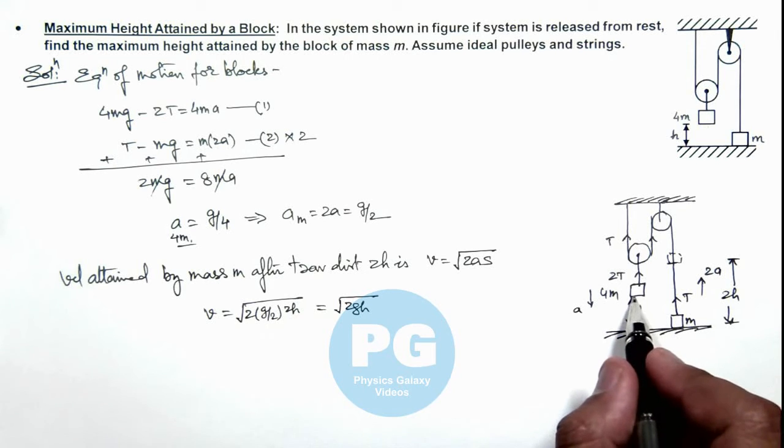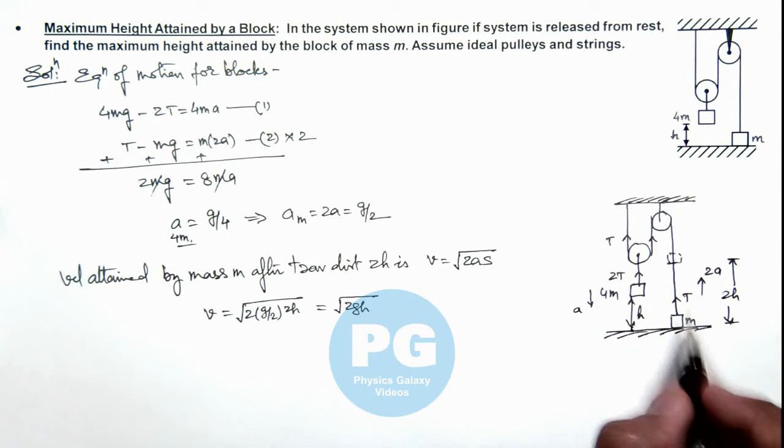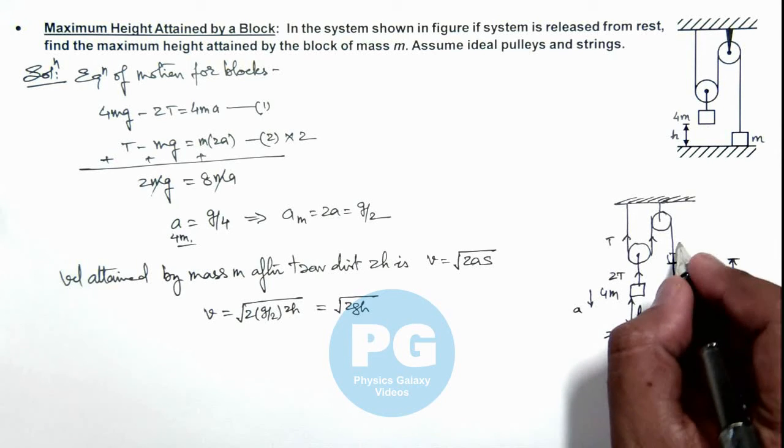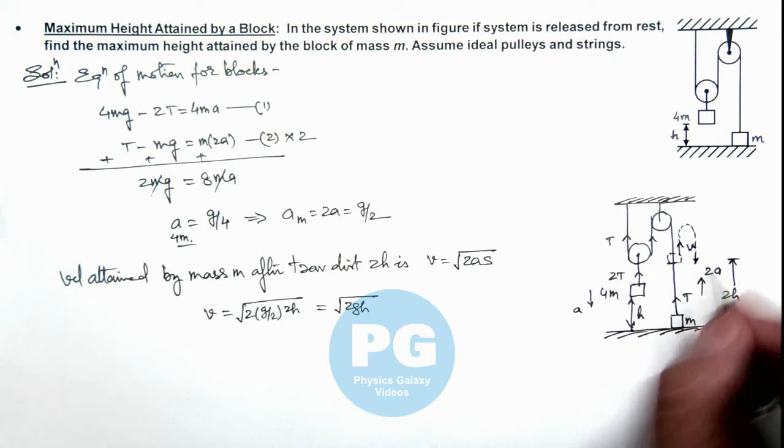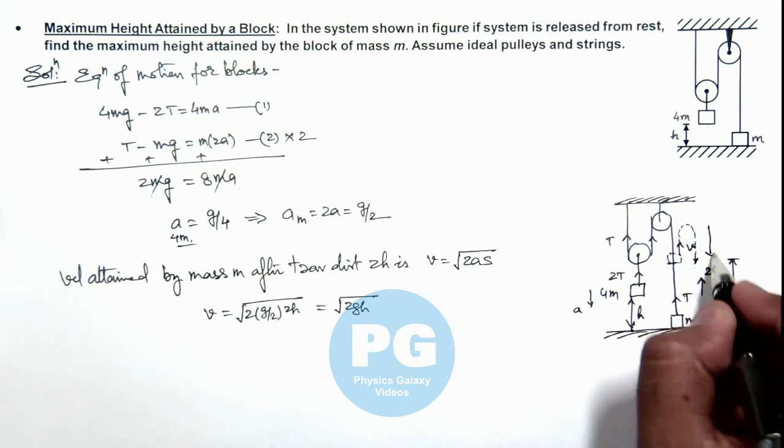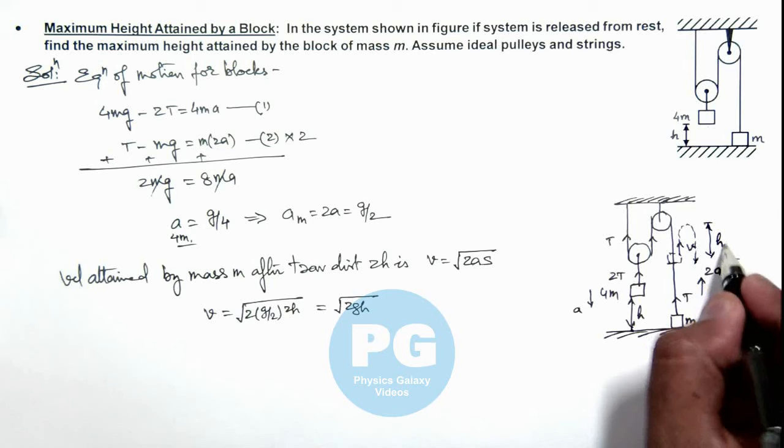When the 4m mass comes to rest on the ground, the string will get slackened and due to the speed, mass m will be in free fall after this point. So it'll go up and finally come down. The height to which it'll be raised up is h1.